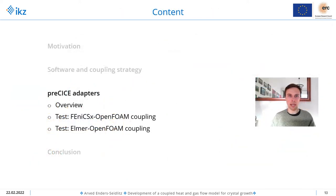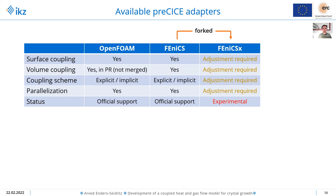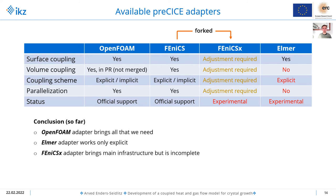Now let's look at the preCICE adapters that are available for this coupling. For OpenFOAM and FEniCS there are officially supported adapters provided that bring all the features that we need. But as already mentioned, I'm not using FEniCS but the newer version FEniCSx. For this there was an adapter forked from the FEniCS adapter which is in experimental status and requires some adjustment. The ELMER adapter is also experimental and was developed in a master's thesis. It includes only some of the features required for us — in particular the coupling scheme is just explicit. My conclusion so far is that the OpenFOAM adapter is great, the ELMER adapter only provides explicit coupling, and the FEniCSx adapter brings the main infrastructure but also requires some adjustment.